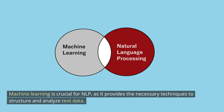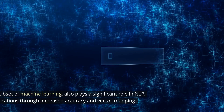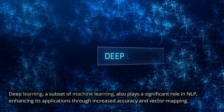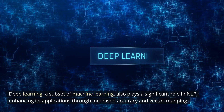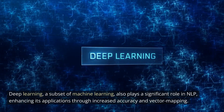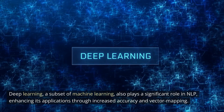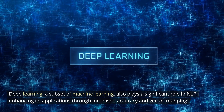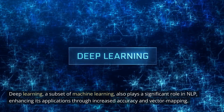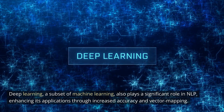Machine learning is crucial for NLP, as it provides the necessary techniques to structure and analyze text data. Deep learning, a subset of machine learning, also plays a significant role in NLP, enhancing its applications through increased accuracy and vector mapping.